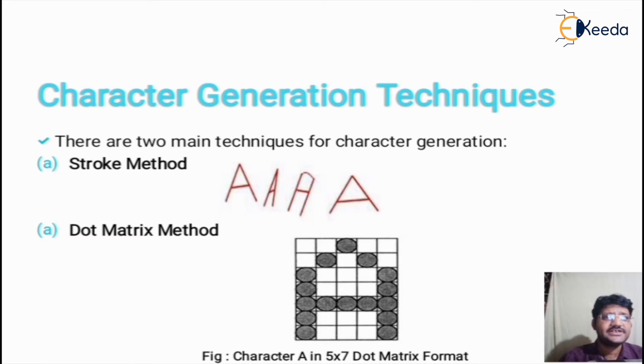Next, character generation method is dot matrix or bitmap method. As this method is known as bitmap, characters are represented by an array of dots in the matrix form. It is a two-dimensional array having columns and rows.